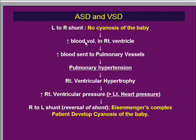When pulmonary hypertension develops, the right ventricle finds it difficult to send blood and must work hard to overcome this pulmonary hypertension. As a result, in the long run the patient develops right ventricular hypertrophy. As right ventricular hypertrophy develops, the right ventricle chamber pressure will gradually but certainly increase. Eventually a point comes when the right ventricle chamber pressure exceeds the left ventricle chamber pressure.